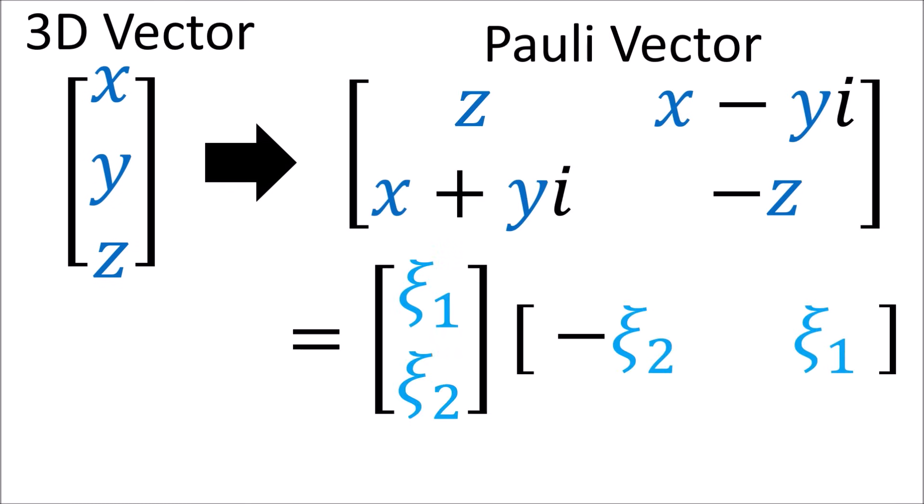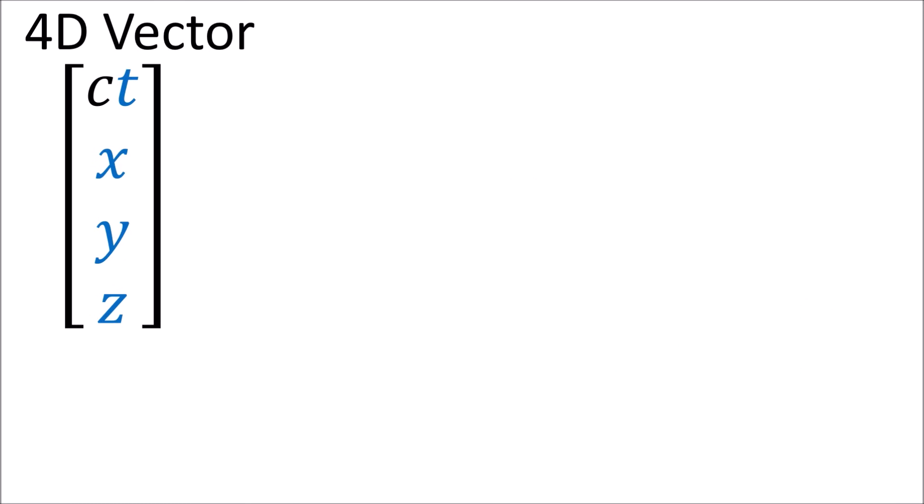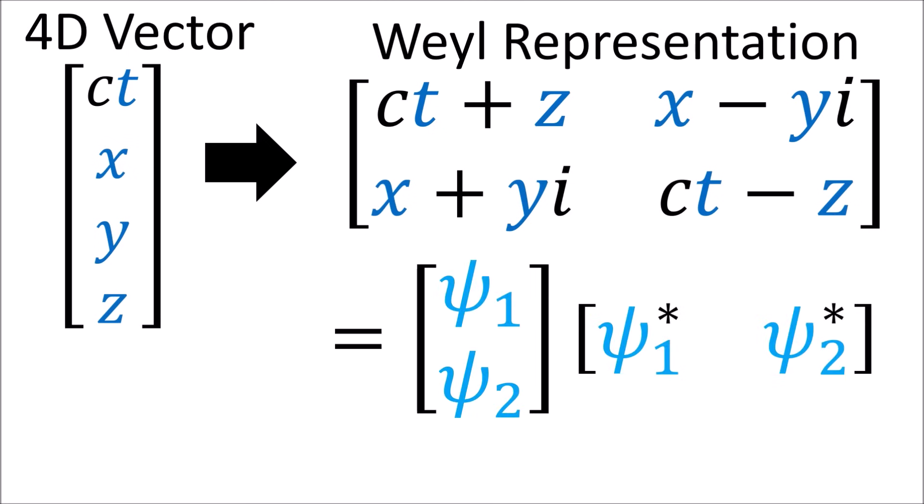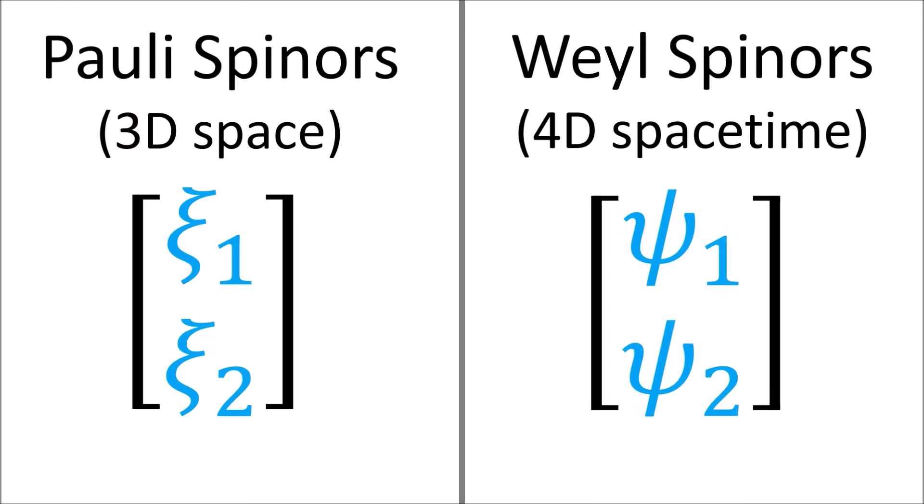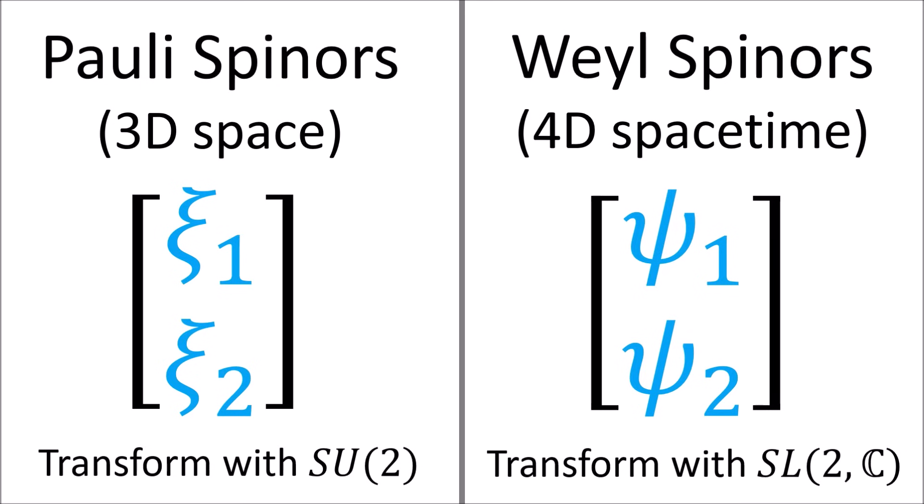While polyspinors are associated with rotations in 3D space, in special relativity it's also possible to get spinors associated with 4D space-time, which are called Weyl spinors. This is a bit confusing, as polyspinors and Weyl spinors are different kinds of objects, but they both look like two component columns. We'll clear up the difference between them in future videos.